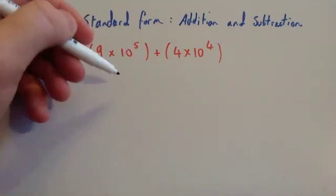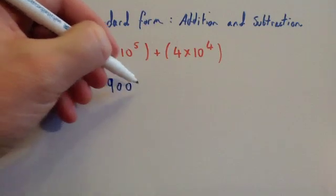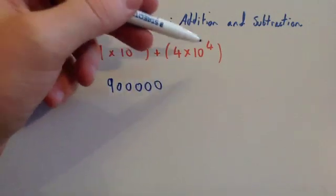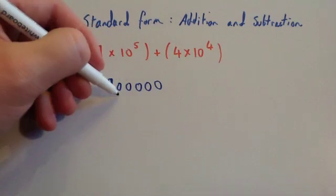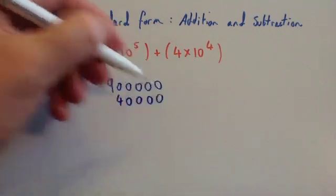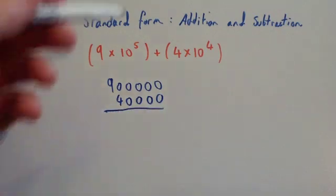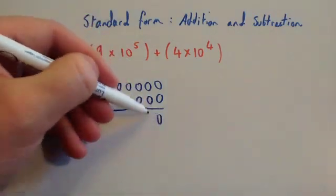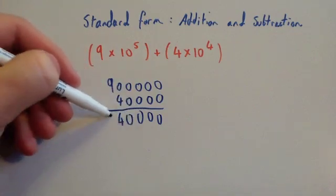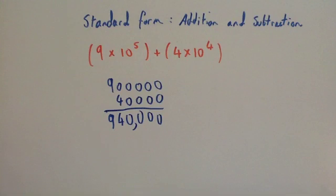So 9 times 10 to the 5 is going to be 9 followed by 5 zeros. This is a 4 followed by 4 zeros. Notice how I've lined them up, so write them like that and then add them. The answer here would be 940,000.